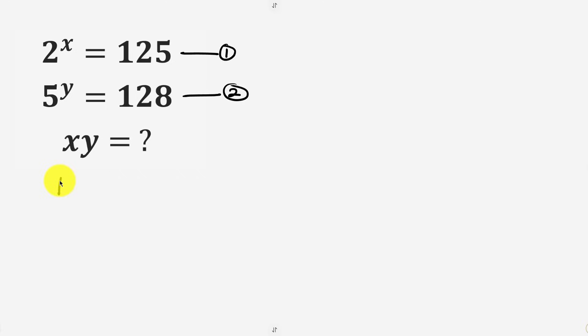So from equation 2 we have 5 to the power of y to be equal to 128 is the same as 2 to the power of 7. Now all we're going to do is multiply the exponent of both sides by 1 over y.